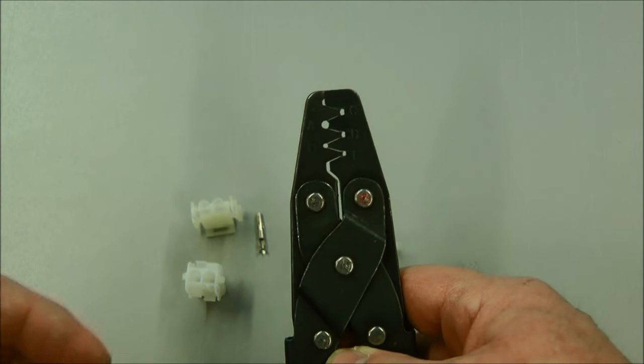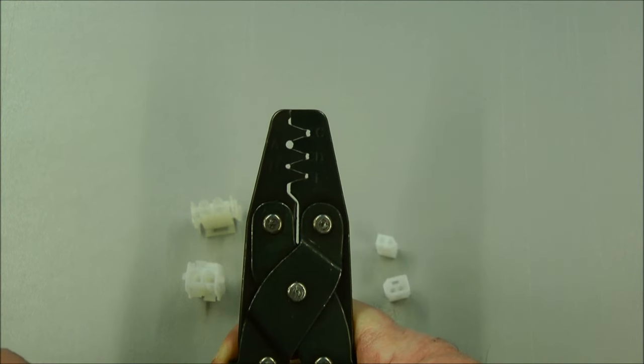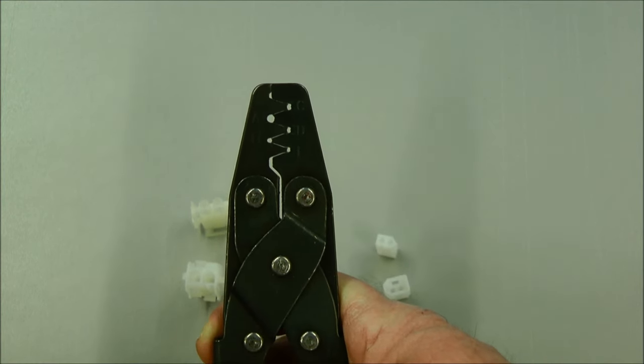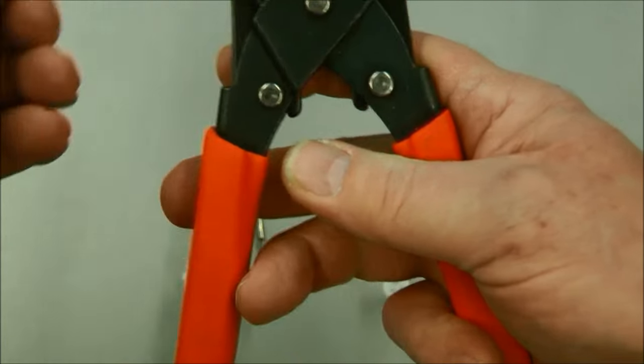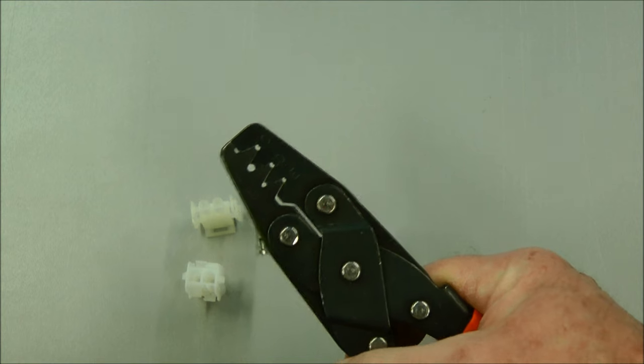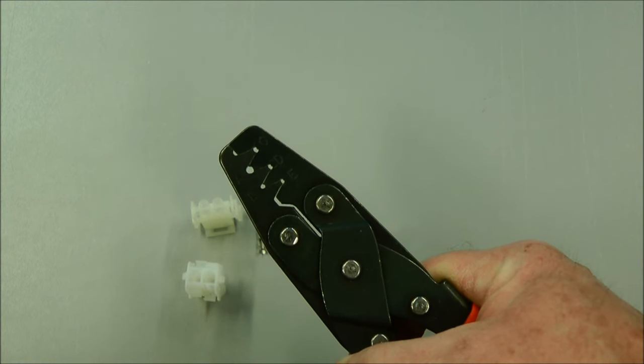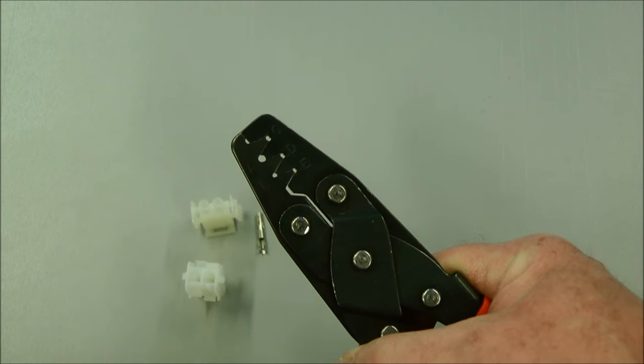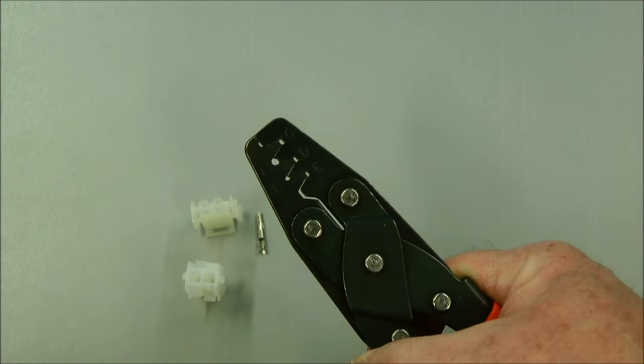This happens to be a generic Molex crimping tool. And you can see there are several openings for various size pins and gauges of wire. It's pretty much a visual thing as far as which one you want to use. You'll see how they fit in there with the various gauge of wires and sizes of pins.